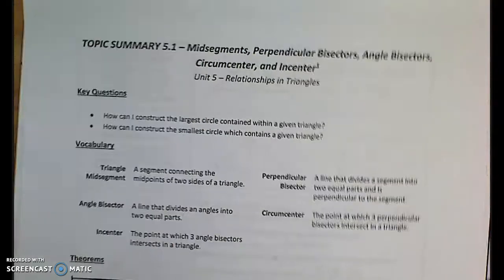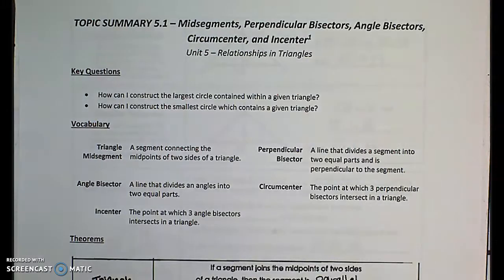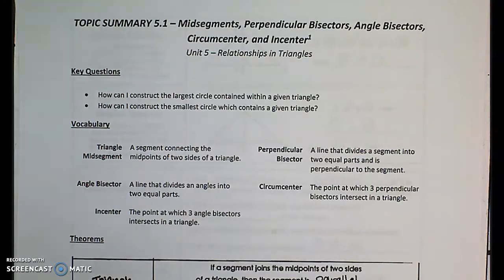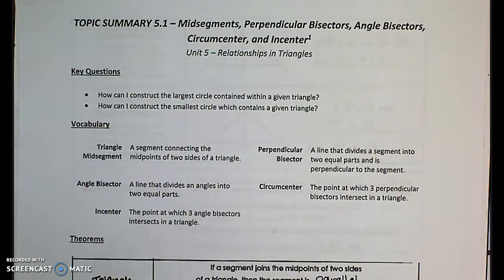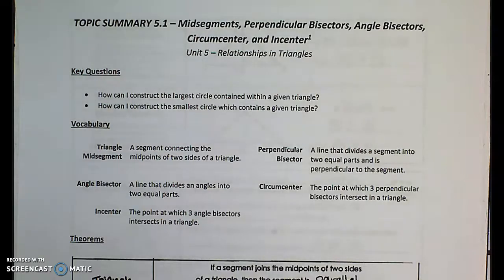There are going to be some new terms here. The triangle mid-segment is a segment connecting the midpoints of two sides of a triangle. A perpendicular bisector is a line that divides a segment into two equal parts and is perpendicular to it, forming a 90-degree angle. An angle bisector is a line that divides an angle into two equal parts. The circumcenter is the point at which the three perpendicular bisectors intersect in a triangle. And the in-center is the point at which the three angle bisectors intersect in a triangle.